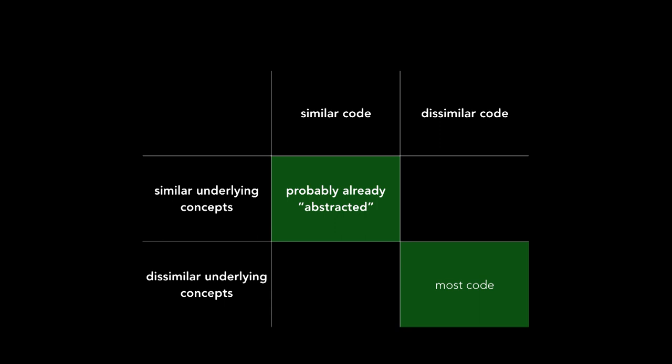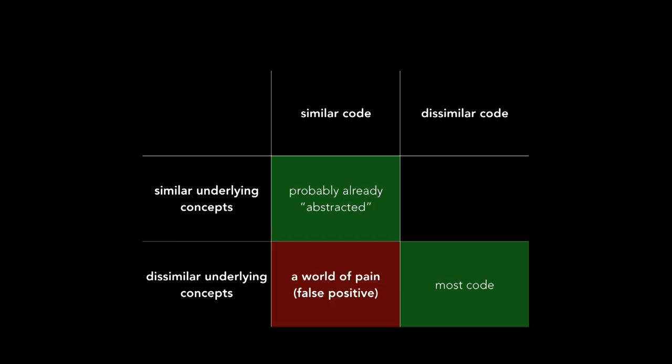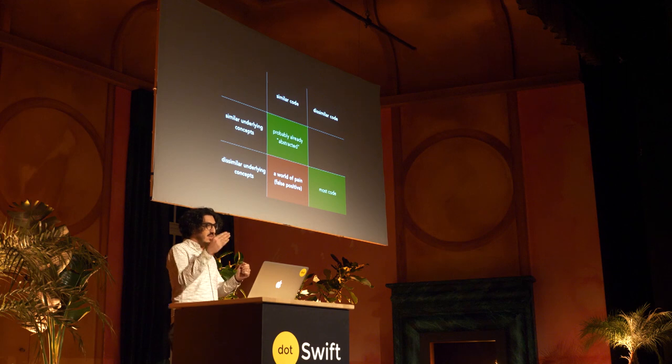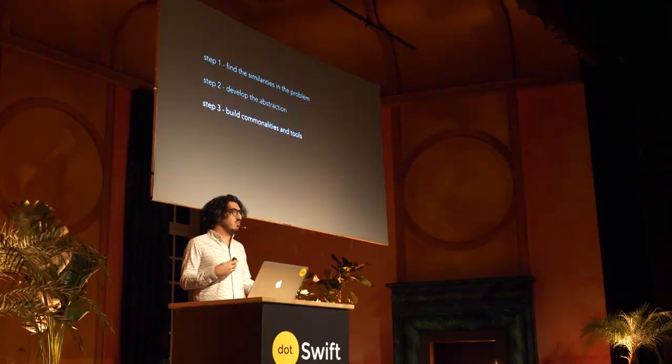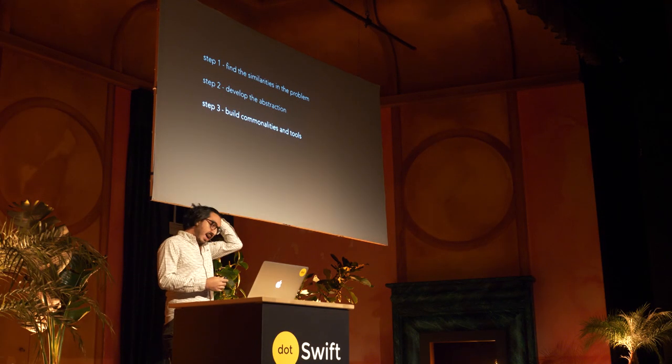But if we have code that looks similar and does not actually represent the same thing under the hood, we end up in a place of pain — extracting a function and keep adding extra parameters, if this, if that, another boolean, another integer, until the function becomes a mess. Sandi Metz, a developer I really appreciate, says: duplication is far cheaper than the wrong abstraction. Code that doesn't look similar but really represents similar concepts under the hood — that's perfect, and that's what this example is all about. Now it's time to build some tools around this abstraction.